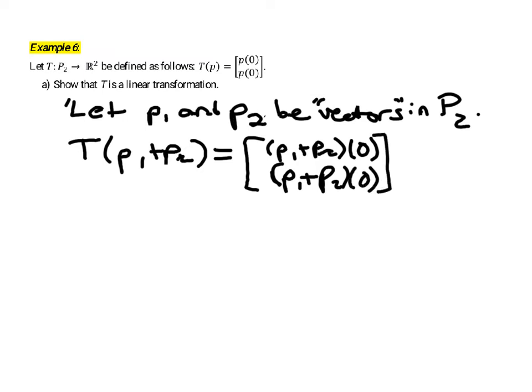Okay, but just by virtue of the way this function addition works, P1 plus P2 evaluated at zero is equal to P1 evaluated at zero plus P2 evaluated at zero. So the first and second entries can be rewritten that way. That's just always the way we add functions.